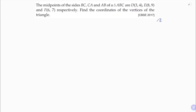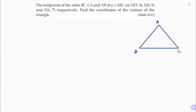We are given triangle ABC and the midpoints of sides BC, CA, and AB. The midpoint of BC is D, which is (3, 4). The midpoint of CA is E, which is (8, 9). The midpoint of AB is F, which is (6, 7). I need to find the vertices A, B, and C, so I'll take them as (x1, y1), (x2, y2), and (x3, y3).